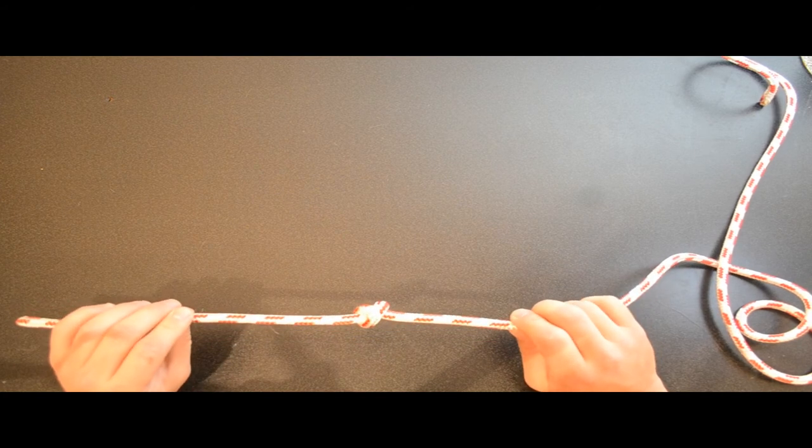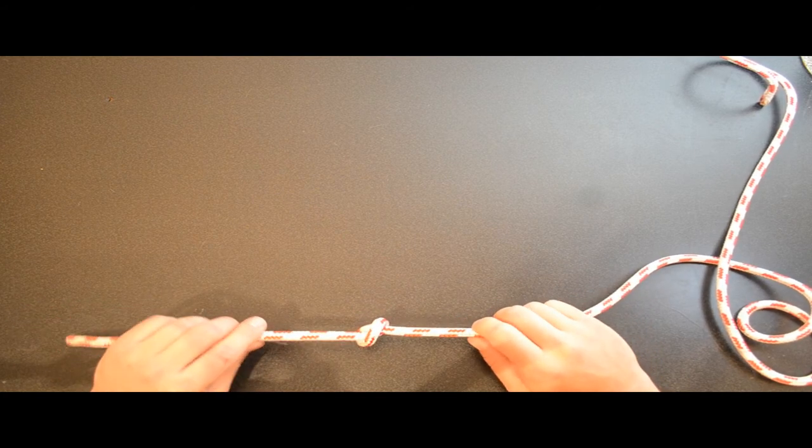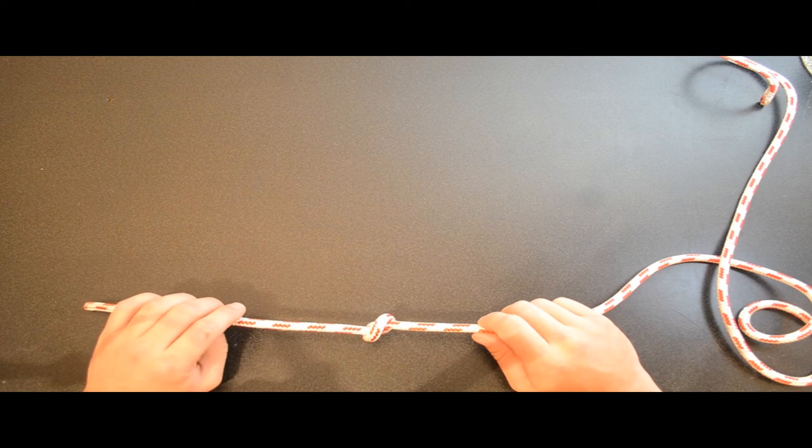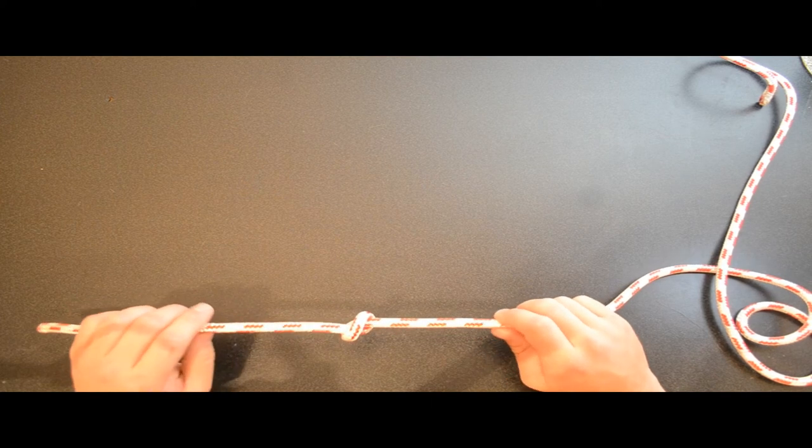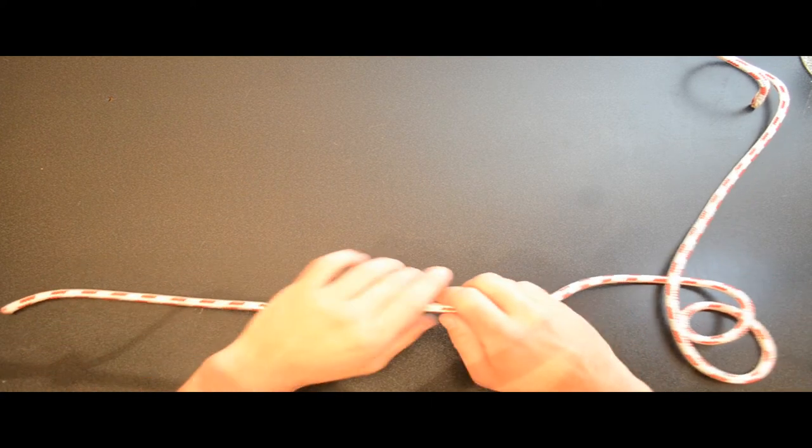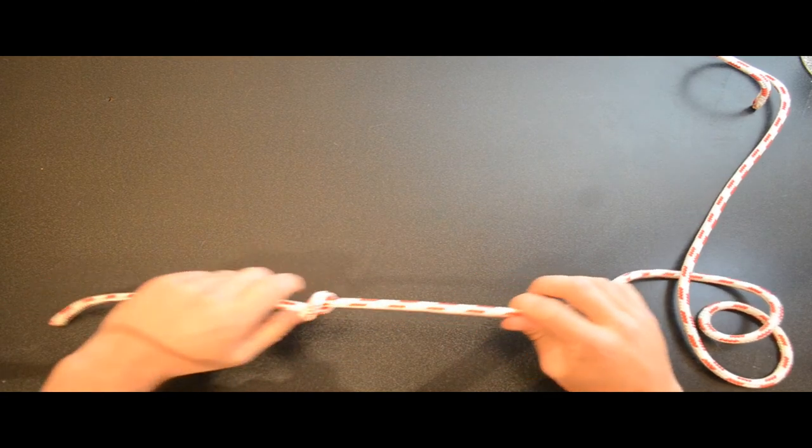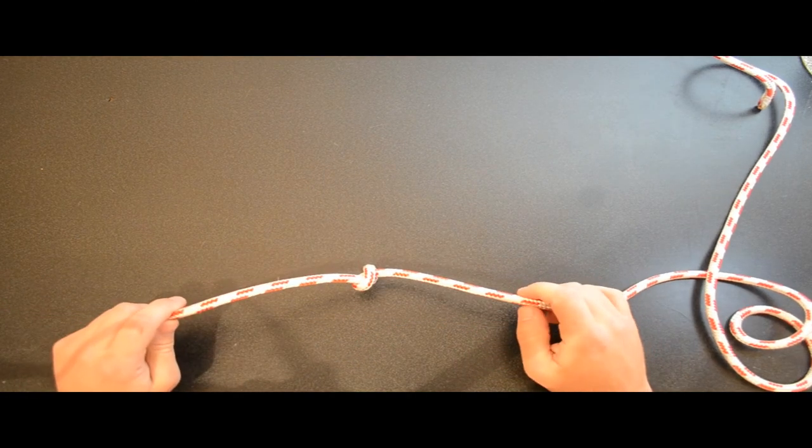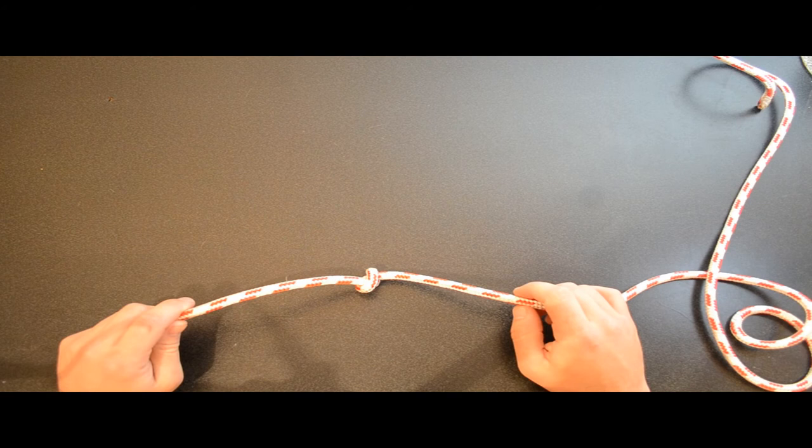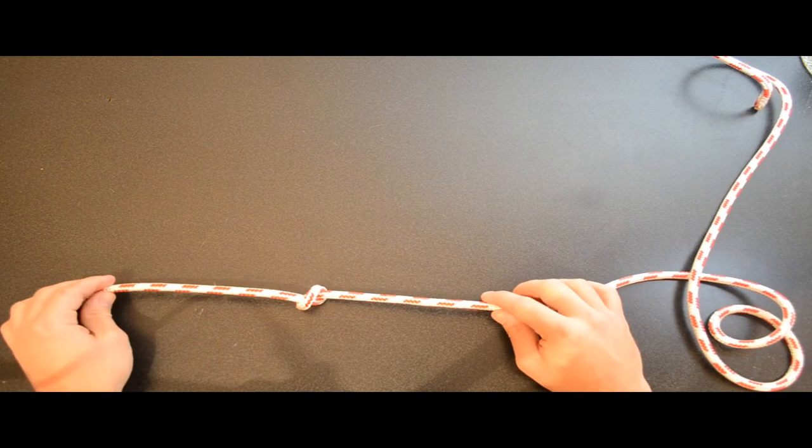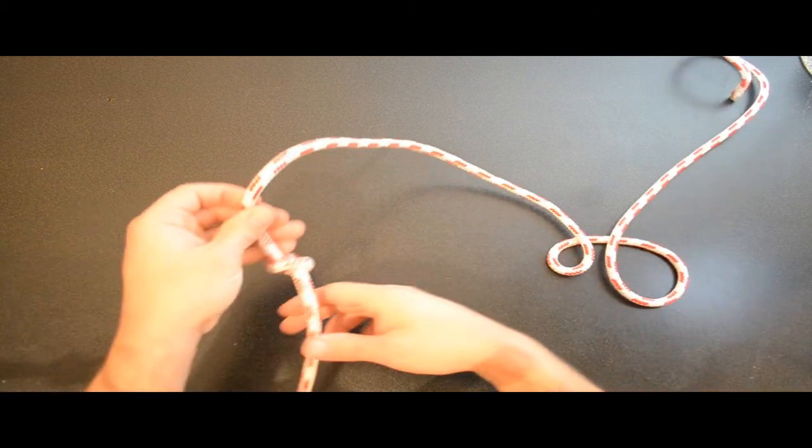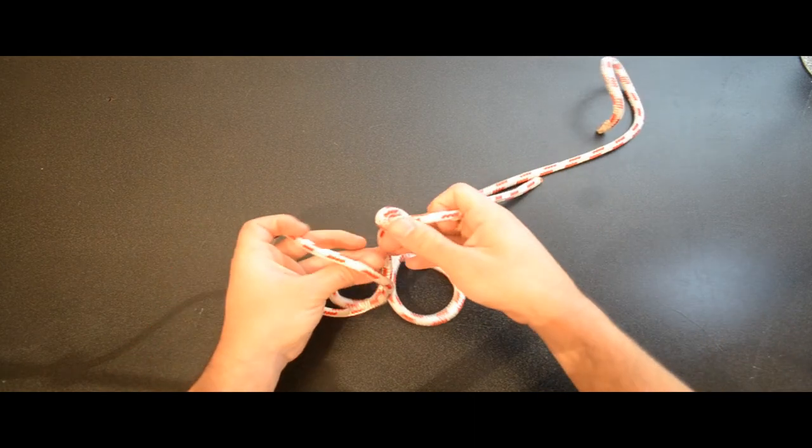These knots are known as stopper knots. They are used to prevent the cord pulling through a hole. For example, a knot at the end of a string of beads, or as part of a far more complex knot.